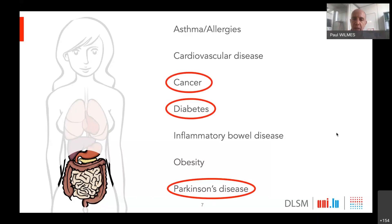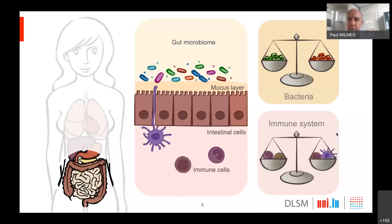In my talk today, I will give you some concrete examples of diseases that we've worked on: cancer, diabetes, and neurodegenerative diseases such as Parkinson's disease. All of these diseases have been shown over the last decade to exhibit differences in the context of the microorganisms in the gut.